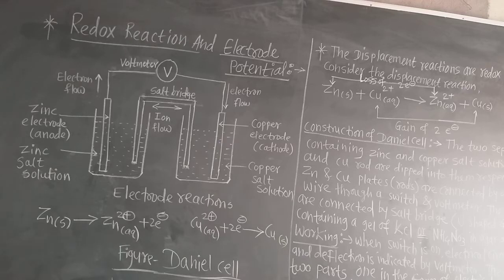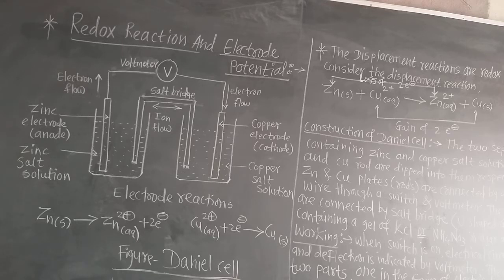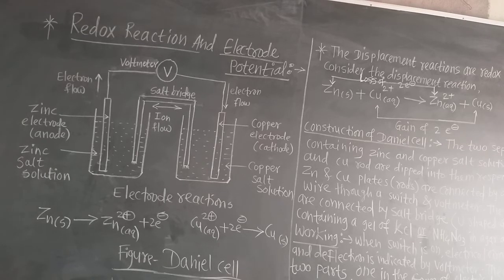If we dip the zinc rod into that bluish copper sulphate solution, after some time the blue colour of copper sulphate disappears. There is no blue colour in the solution, and the zinc rod becomes somewhat reddish in colour.